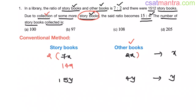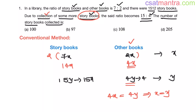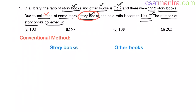Now this becomes 14x, and this is 4x. Making the quantity of other books equal in both cases: 4x is equal to 4y, which implies x is equal to y. Now 15y becomes 15x and 4y becomes 4x, because x is equal to y. So, multiplying 7:2 by 2, we got 14:4. Initially we have storybooks as 14x and other books as 4x.